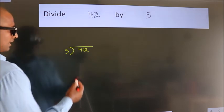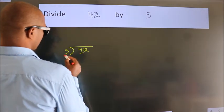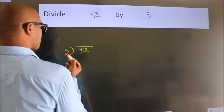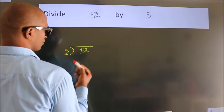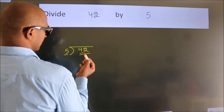Next. Here we have 4, here 5. 4 is smaller than 5, so we should take two numbers, 42.